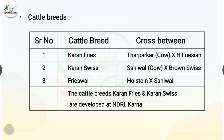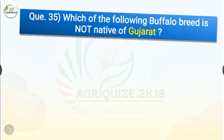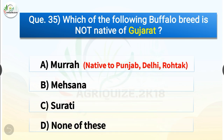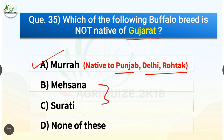Question number 35. Which of the following buffalo breeds is not native of Gujarat? The options are Murrah, Mahsana, Surati or none of these. The correct answer is option A, Murrah. So Murrah breed is not native of Gujarat — it is native to Punjab, Delhi and Rohtak — whereas Mahsana and Surati are native to Gujarat.